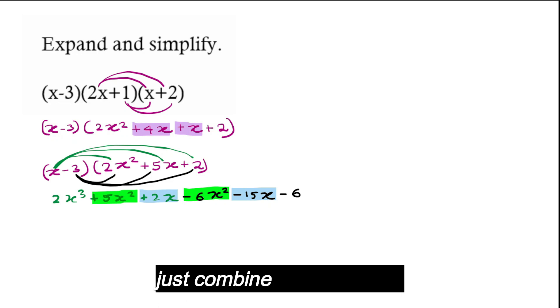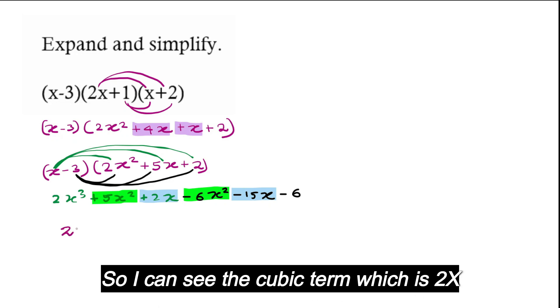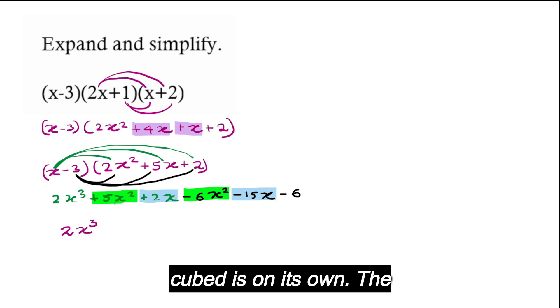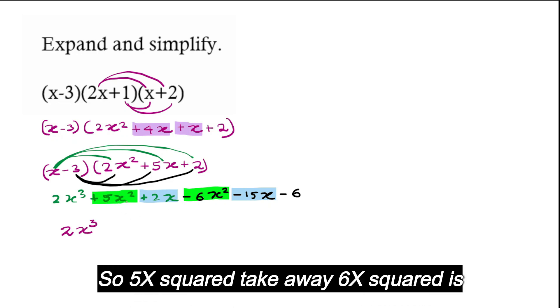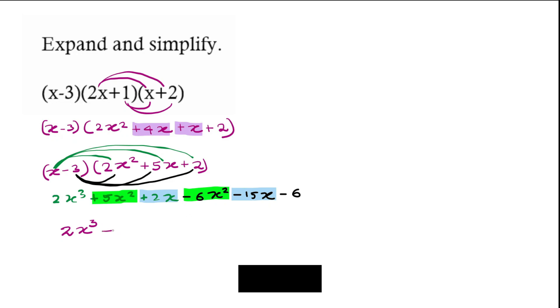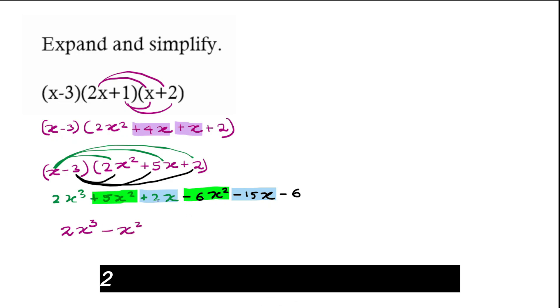Now to get the final answer, we are going to just combine the like terms. So I can see the cubic term which is 2x cubed is on its own. The green ones are the square terms, so 5x squared take away 6x squared is negative x squared. 2x negative 15x gives you negative 13x, and the 6 at the end negative is on its own.